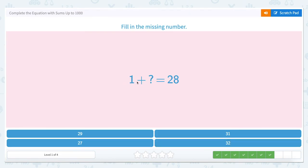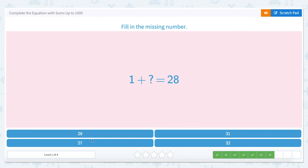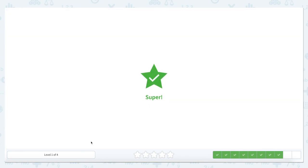Now we're at 1 plus something equals 28. Let's use that scratch pad. 28 minus 1 equals what? Well, 28 minus 1, the number right below 28, is 27. So let's check, oh, there it is, 27.